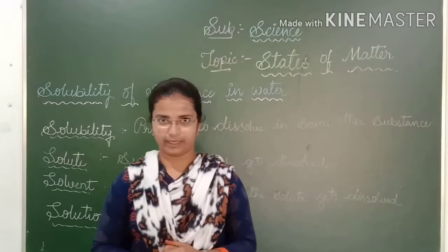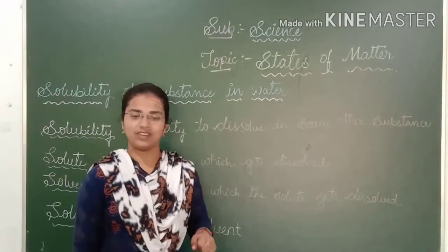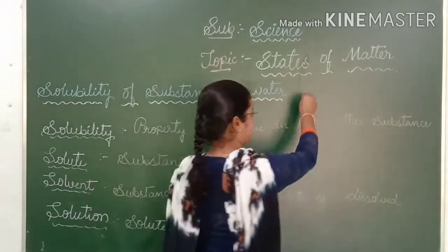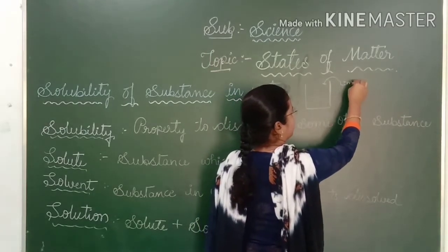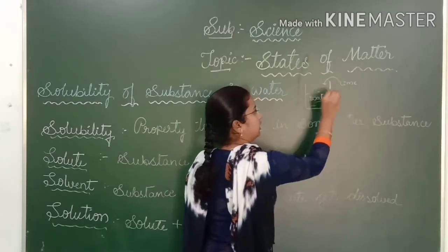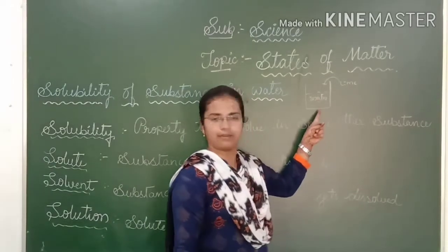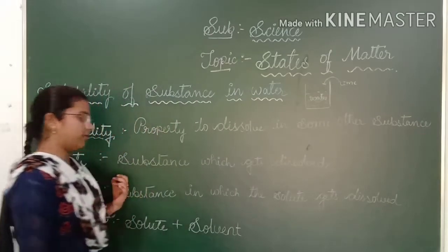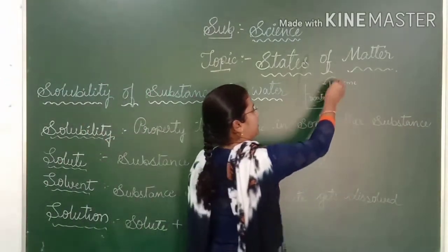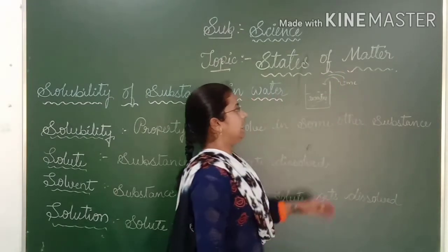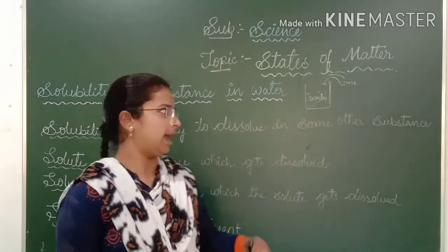Next, we shall learn what is solute. Solute is the substance which gets dissolved. As we discussed, we have taken a glass of water and poured some amount of lime juice. If you are adding some amount of lime or some amount of sugar into water and it gets dissolved, it means that it is the solute. If you are mixing something in water and it gets dissolved, it is called as solute.